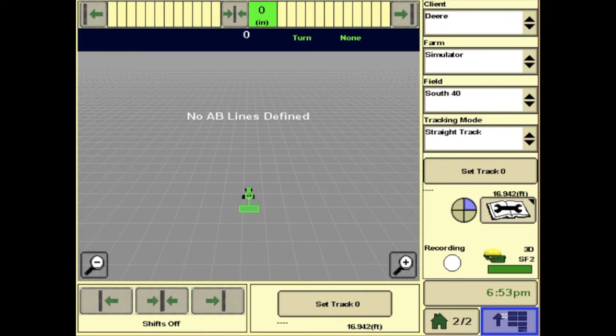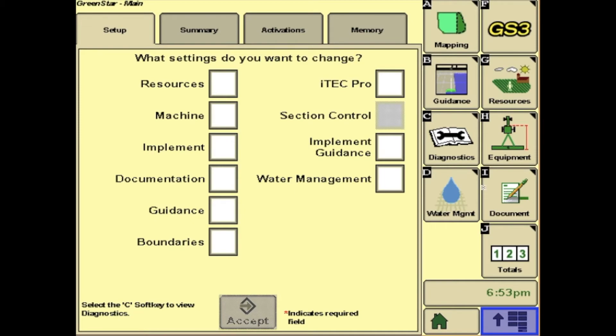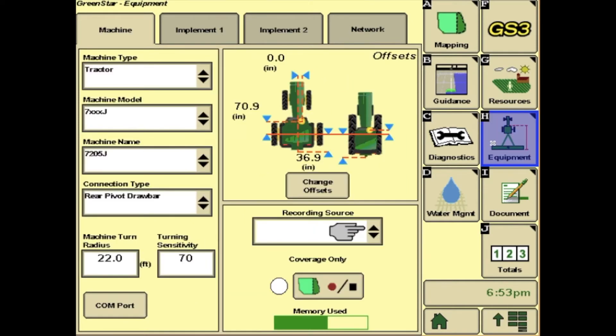To get there, you will hit your main menu, GS3, and then letter H on the right, Equipment.